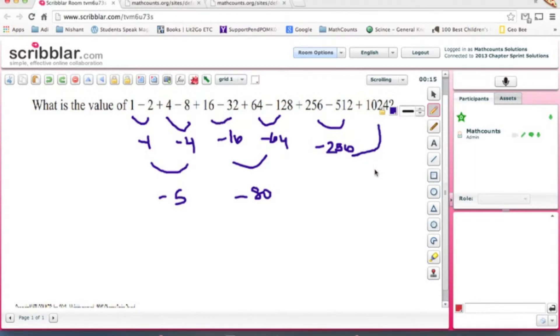Which is 786. Okay, so we'll group once more: minus 85, and here we have 683, and that's our answer. 683 is the answer.